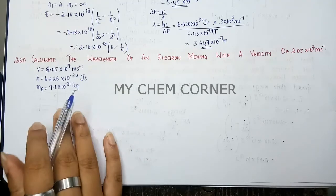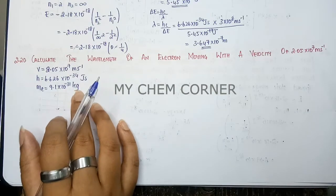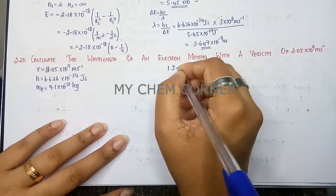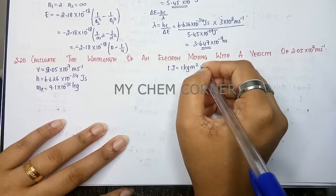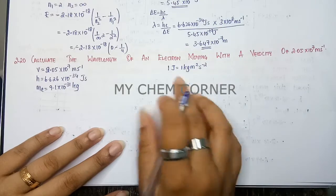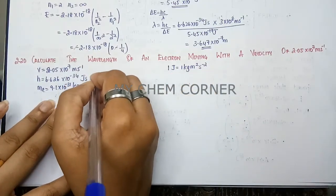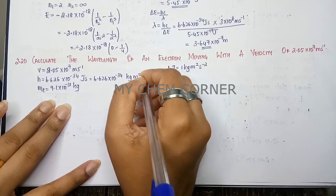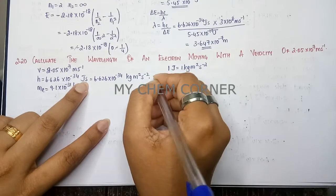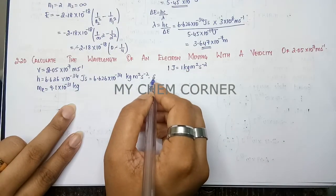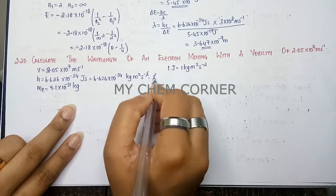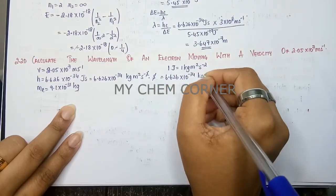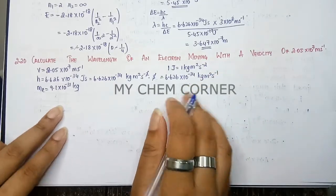The units kg and joule are different, so we need to convert Planck's constant. To bring a relationship between joule and kg, 1 joule equals 1 kilogram·meter²·second⁻². So we change h to 6.626×10⁻³⁴ kg·m²·s⁻² and then multiply by seconds (from joule-second). One second cancels, giving us 6.626×10⁻³⁴ kg·m²·s⁻¹. Now all parameters are in compatible units.